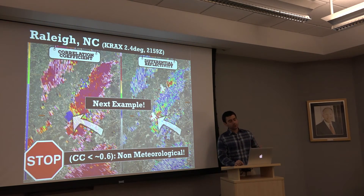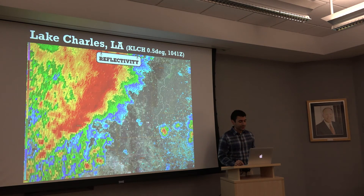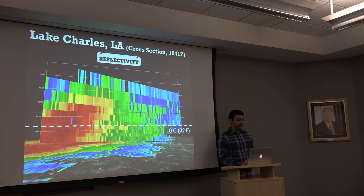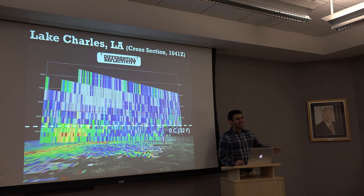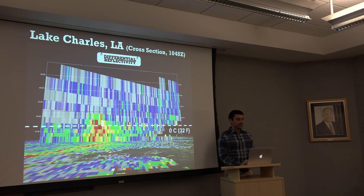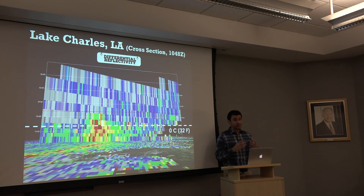Now we'll use a squall line case from Lake Charles — an early morning case at 1041Z. Drawing a cross-section through the line of storms with the freezing level overlaid, we look at ZDR: we don't see any tall tower of ZDR reaching above the freezing level, so we don't really have a nice ZDR column signature. On the next scan, however, we see a much higher column of ZDR reaching above the freezing level — that's our ZDR column signature. It tells us the updraft has strengthened; we need to watch this area more closely and expect an increase in reflectivity.